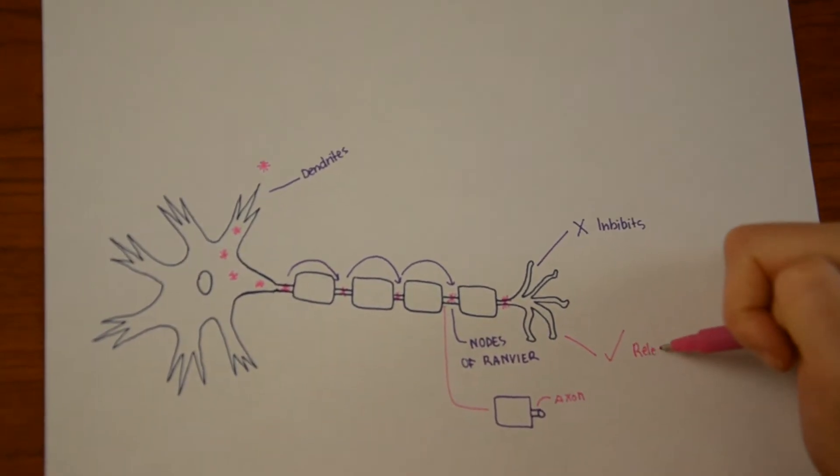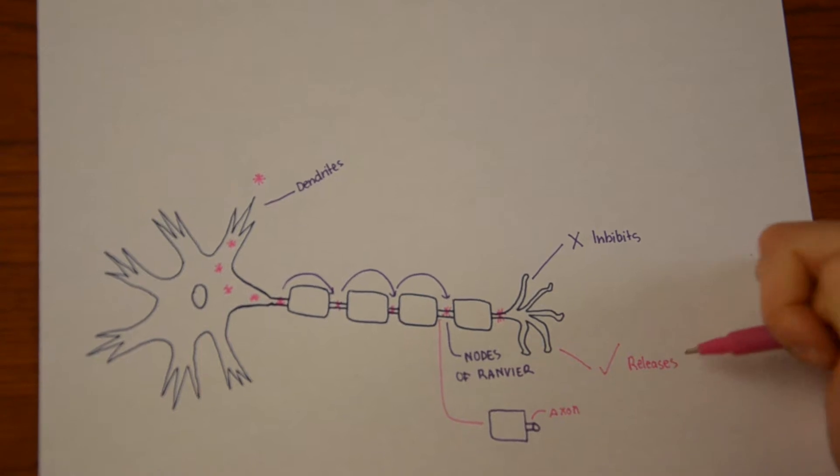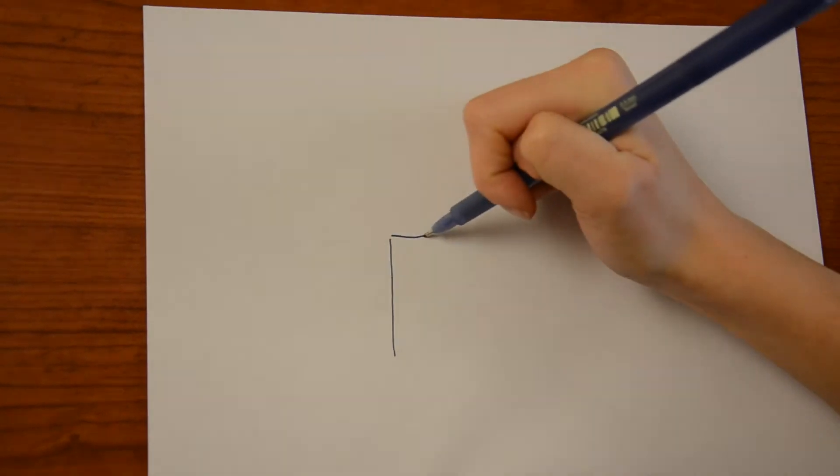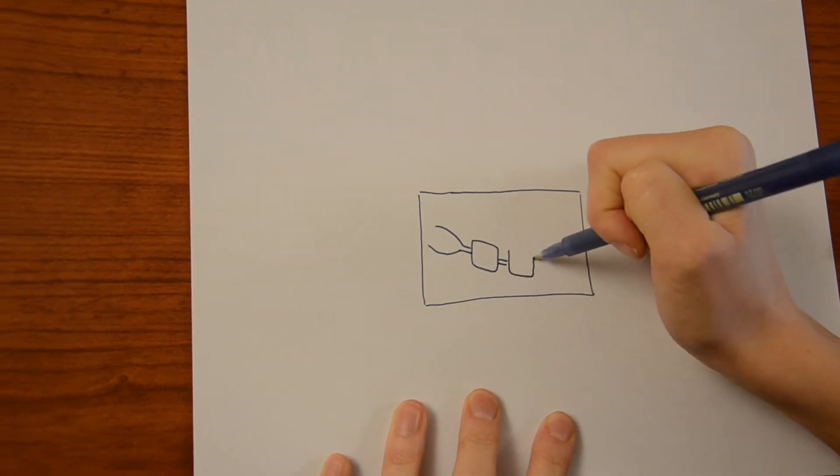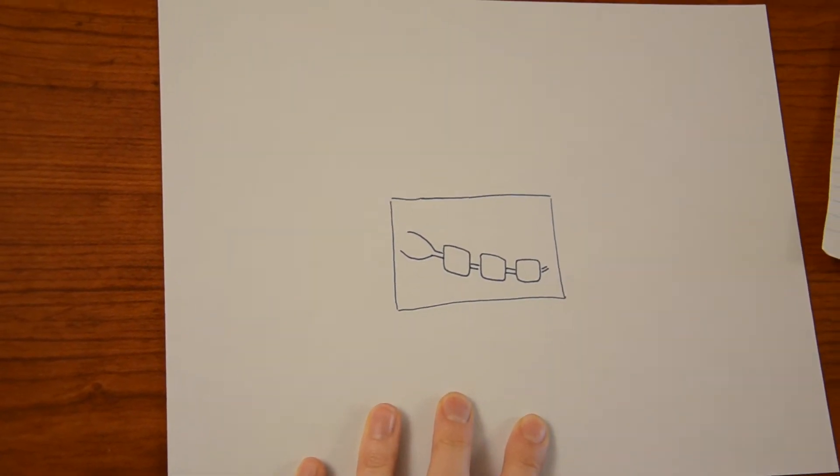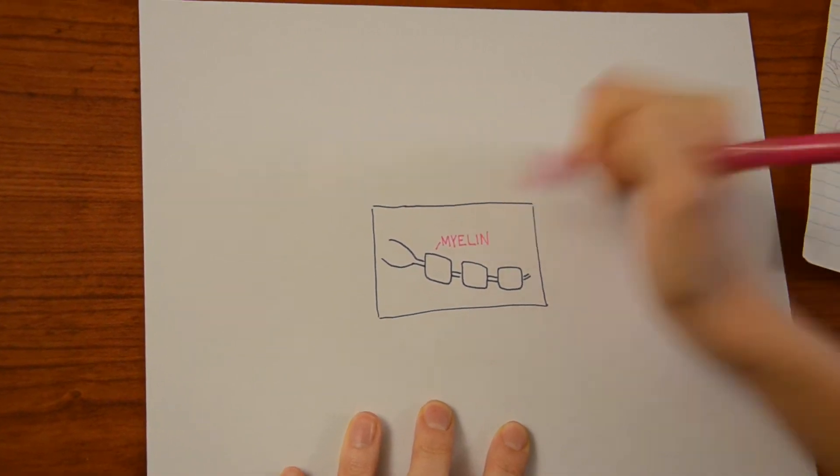Now, how do the signals jump along the axon? Let's take a closer look. The axon is covered in the myelin sheath, which is created by oligodendrocytes, a type of glial cell in the central nervous system. This myelin sheath increases the speed and efficiency of the axons in some of the neurons.